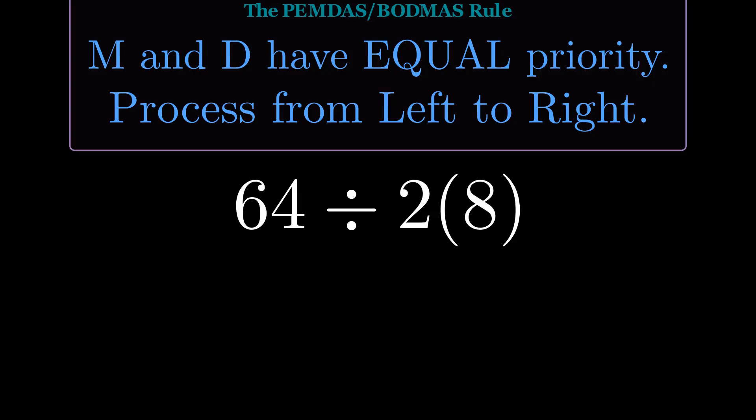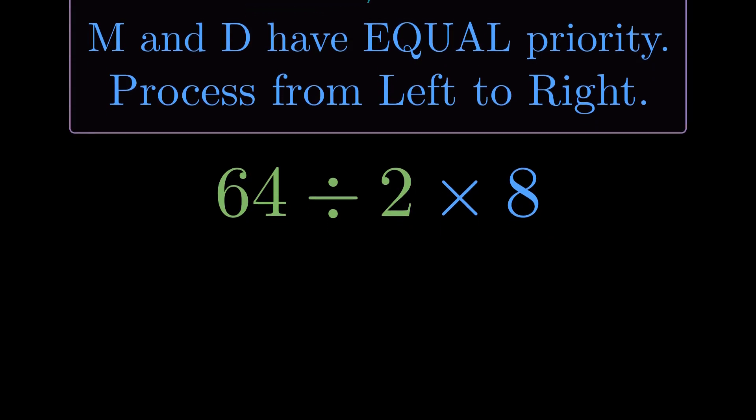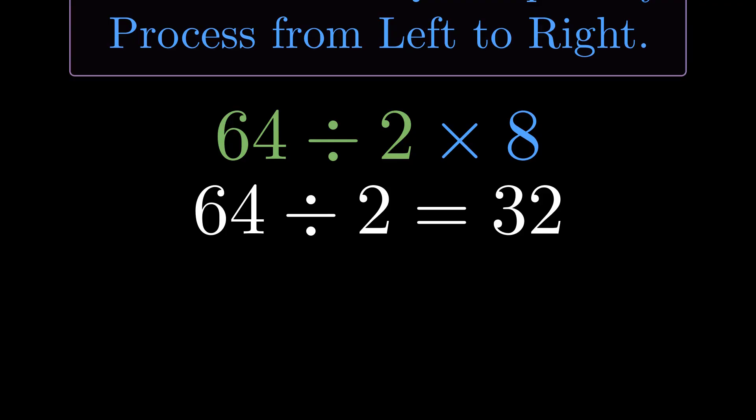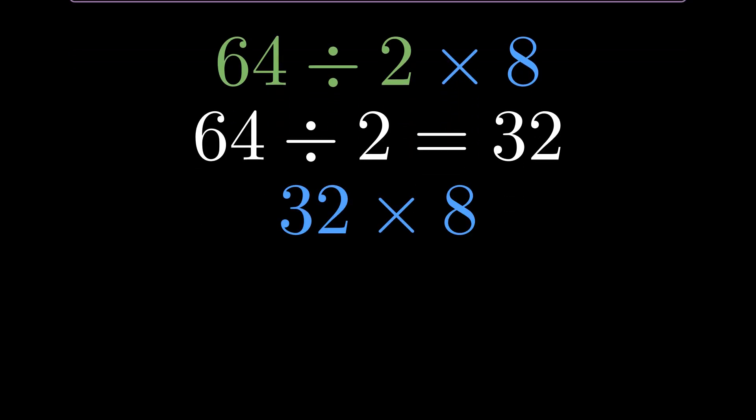Starting from the same place, let me make the multiplication explicit. Now it's clear: we have 64 divided by 2 times 8. Following left to right, the first operation is 64 divided by 2. 64 divided by 2 equals 32. Now we have 32 times 8, which equals 256. A completely different answer.